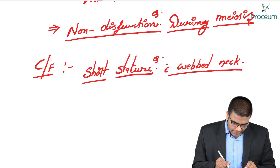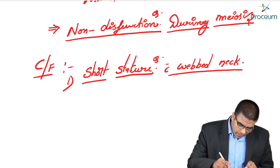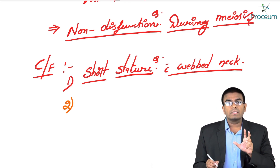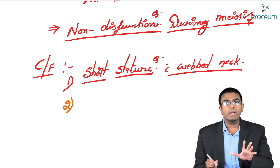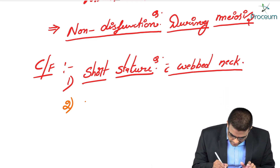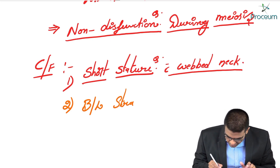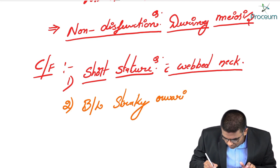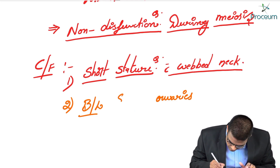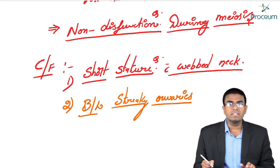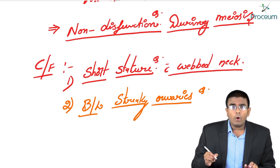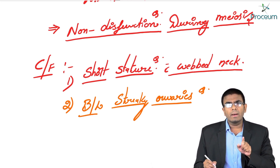If a female has only one X chromosome instead of two, the gonads — in this case the ovaries — are not properly developed. For proper ovarian development, two X chromosomes are required. With only one X chromosome, bilateral streaky ovaries are seen. They are not well-formed ovaries; only a small streak of tissue is present.